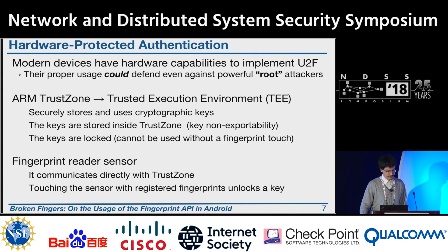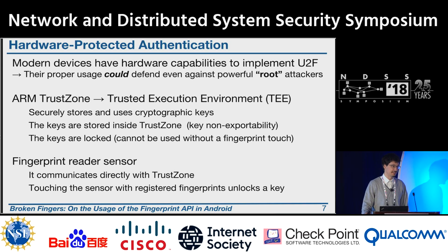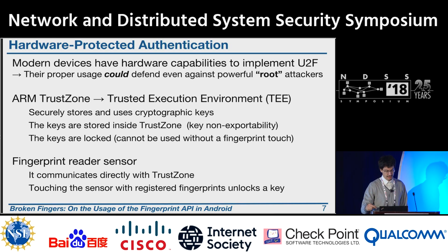Modern devices have hardware capabilities to implement something similar to Universal Two-Factor, and the proper usage of these technologies could even defend against root attackers — that in Android means an attacker able to completely compromise the Linux-based operating system. In particular, we have TrustZone, which can be used to implement a Trusted Execution Environment. This TEE can store and use cryptographic keys that are not exportable because they are inside TrustZone, and they can be locked so they can only be used if the user touches the sensor. The fingerprint sensor communicates directly with TrustZone, and by touching the sensor with a registered fingerprint, a cryptographic key is unlocked.